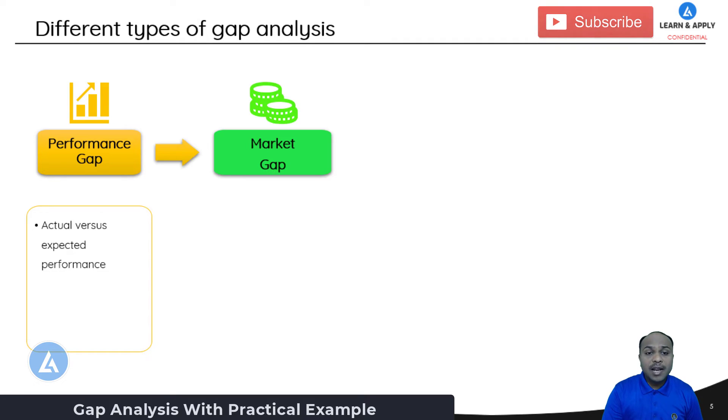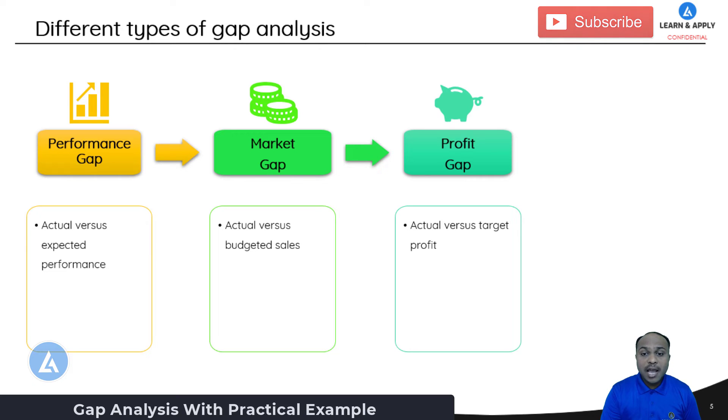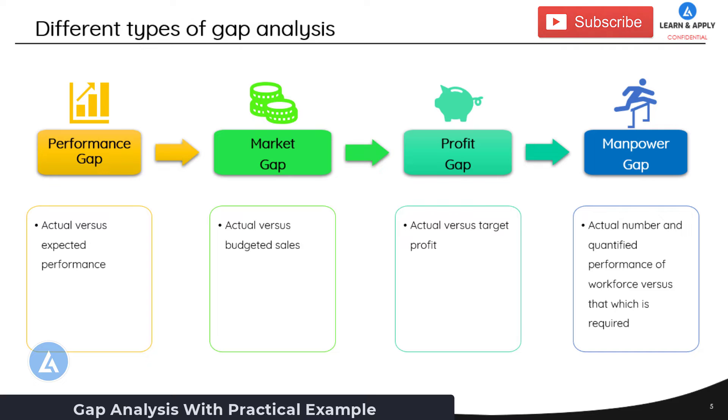The second type of gap analysis is a market gap. In this market gap, we are talking about what is the actual versus budgeted sales. The third type of gap analysis is profit gap. In this type of gap analysis, we are comparing what is the actual profit that we are having versus what is the targeted profit. And the last type of gap analysis is a manpower gap. It is the difference between actual number and qualified and quantified performance of workforce versus that which is required. These are the main four types of gap analysis.